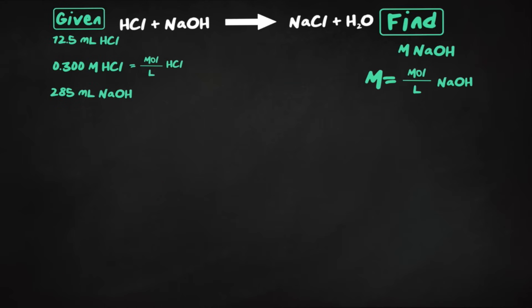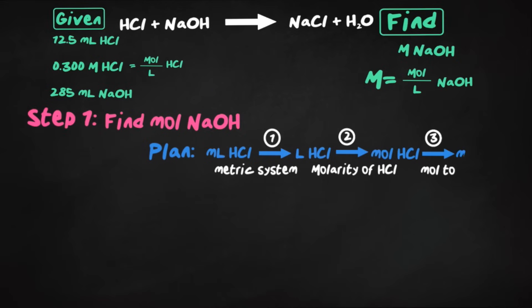So our first step is to find the moles of NaOH. And let's plan this out. We said we're going to always start with the compound, or really, we're starting with whatever we're not looking for. So since we're finding NaOH, we're going to start with the milliliters of HCl. Our plan will be starting with the milliliters of HCl, then convert that to liters of HCl using the metric system.